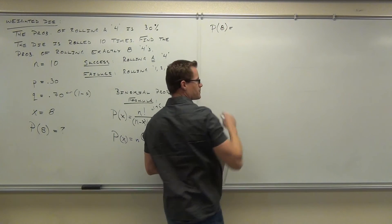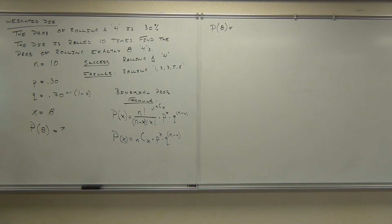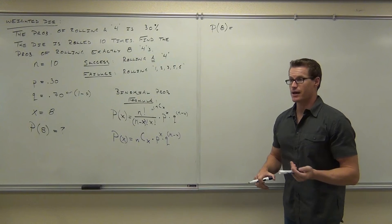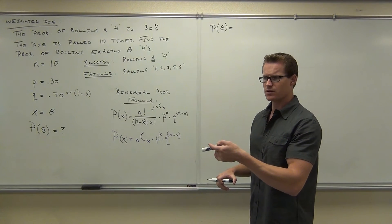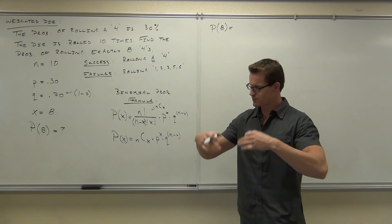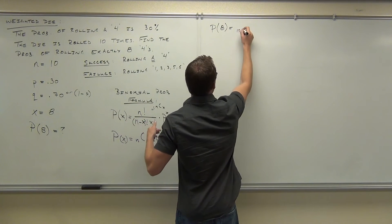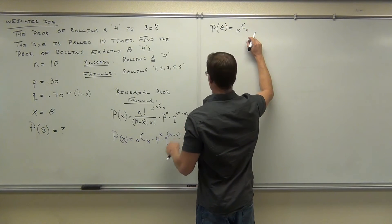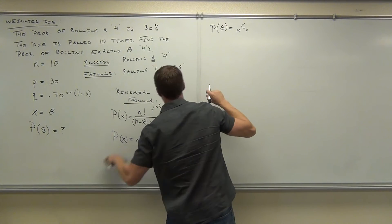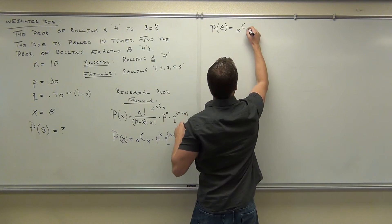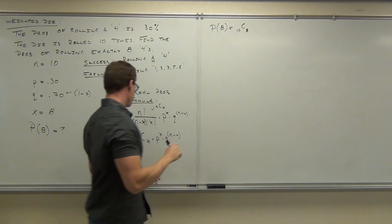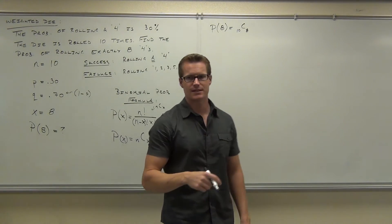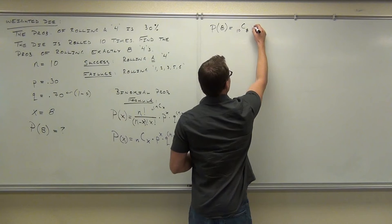We're going to look for the probability of eight successes. What this says to do is: first, N C X. What was our N in this case? We have ten. So let's do 10 C 8 — eight successes. If X is N C X, in our case we have ten trials and we're looking for exactly eight successes.